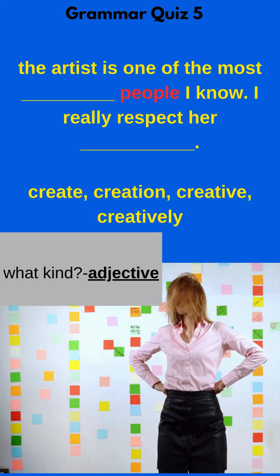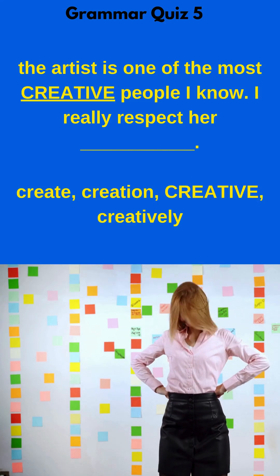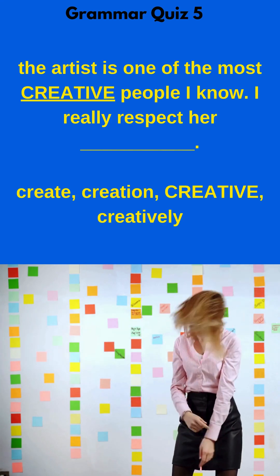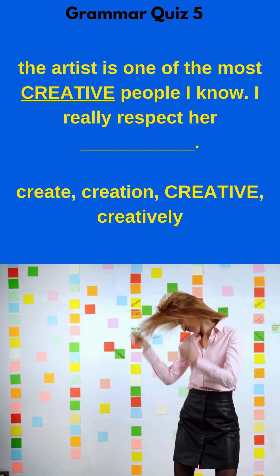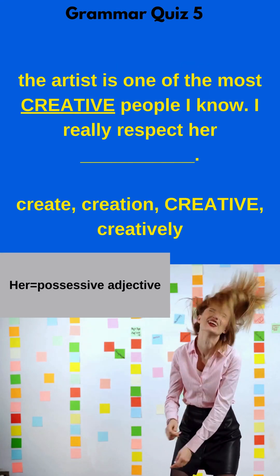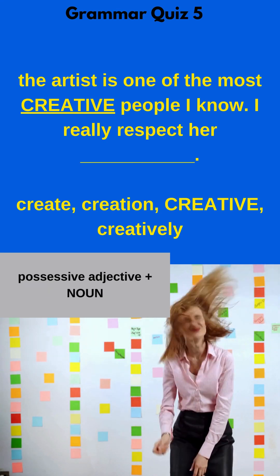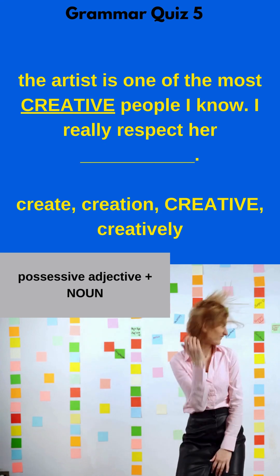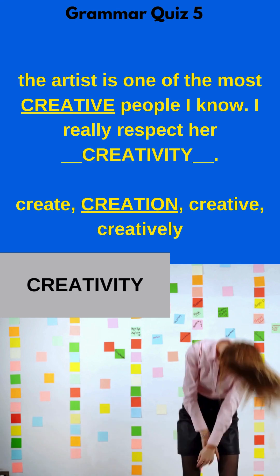From that list, the adjective is 'creative.' In the second sentence, I see I have, 'I really respect her blank.' 'Her' is a possessive adjective. And after a possessive adjective, I need a noun. In that list of nouns, I could go with 'creation.' But I could also go with another noun, 'creativity.' Maybe that one sounds even better.